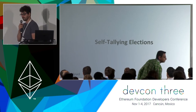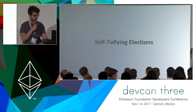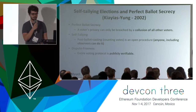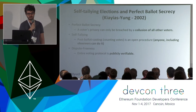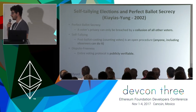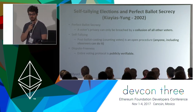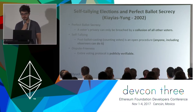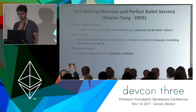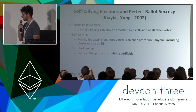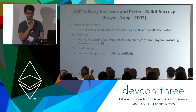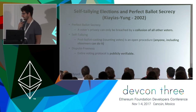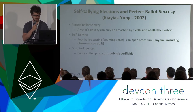This brought me to self-tallying elections, first proposed back in 2002. These elections have three different properties. First is perfect ballot secrecy: a voter's privacy can only be breached by a full collusion of all other voters. Second, it's self-tallying — after the election, anybody can count the votes and we don't have to rely on anybody to do that for us. Third, it's dispute-free: given the election transcript, I can verify myself that the election was run correctly.